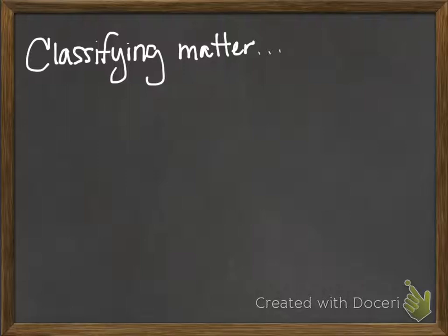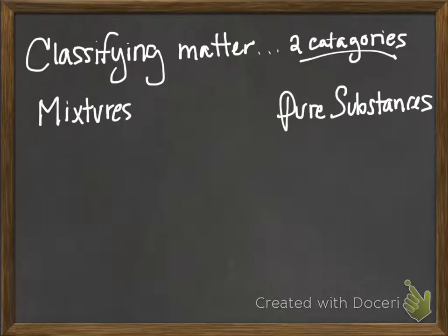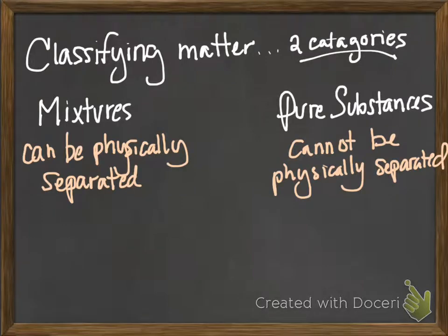Science is all about identifying and classifying materials, and no branch more so than chemistry. So how do we classify matter? Well, we can put all matter — everything on the planet, everything in the universe — into two big, broad categories: mixtures and pure substances. A mixture is able to be physically separated, and that physical separation can take a variety of forms — everything from picking the chocolate chips out of cookie dough to separating a sugar and water mixture by boiling until all the water evaporates and you're left with just sugar. A pure substance cannot be physically separated. If you're given a pitcher of water, there's no way to separate the hydrogen and the oxygen using physical means — you'd have to resort to a chemical separation. So we know that water is a pure substance.